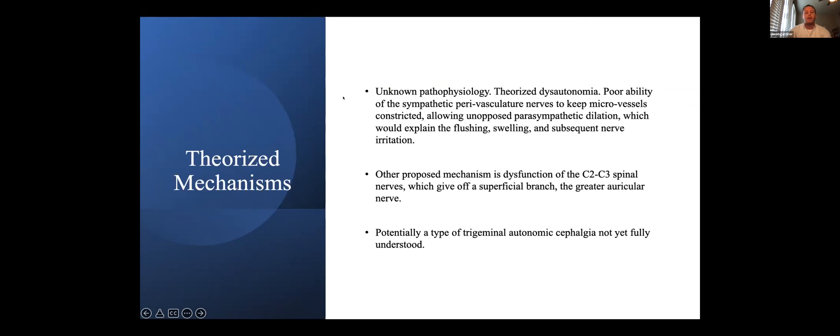So what do we think is going on here? We don't really know. Unknown pathophysiology. It's a theorized dysautonomia. There is a good paper that talks about the vasculature, the perisympathetic vasculature and the potentially poor ability of the sympathetic perivasculature nerves to keep the micro vessels constricted, allowing the parasympathetic division to go unopposed and give this massive dilation of that area specifically, which would explain the flushing, the swelling and the subsequent nerve irritation.